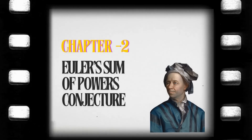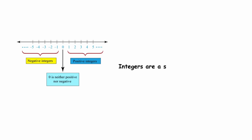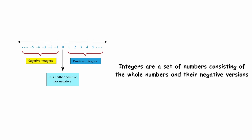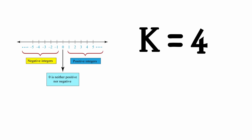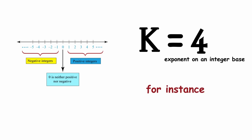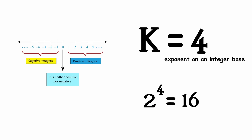Euler's Sum of Powers Conjecture. Integers are the set of numbers consisting of the whole numbers and their negative versions. Pick an integer greater than 1 — we'll call that integer k. For instance, suppose we choose k equals 4. If you use k as an exponent on an integer base, then the resulting number is called a kth power. For instance, 2 to the 4th power, which is 16, is a 4th power.